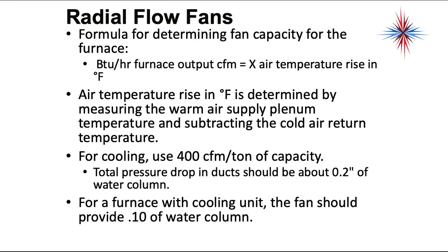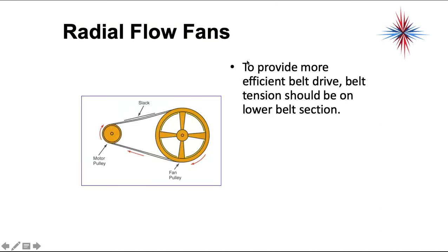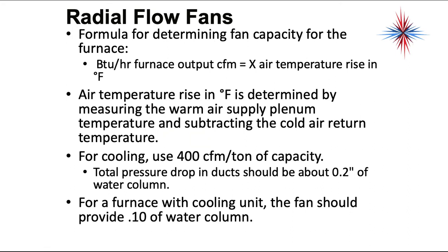For cooling we use 400 CFM per ton of capacity. The total pressure drop in the ducts should be about 0.2 inches of water column for a furnace with a cooling unit. The fan should provide 0.1 inches of water column, but always look at the nameplate on the unit. There's a slight correction on this formula: it's 1.065 times delta T.